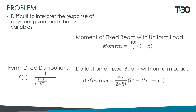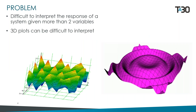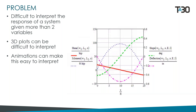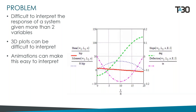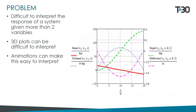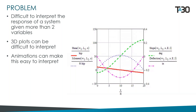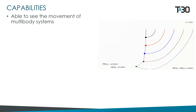The best way to answer why you would want to use animations is through an example. Say you wanted to look at the deflection of a beam along its axis when it's fixed at both ends, but you also wanted to look at how this deflection changed with an increasing load — effectively looking at two variables. You could either make a 3D plot, which can be difficult to interpret, or make multiple plots, which can be cumbersome. But with Mathcad, you can do everything in one animation. You can see the deflection of the beam increase with increasing load, and also plot the shear, slope, and moment of the beam along its axis.